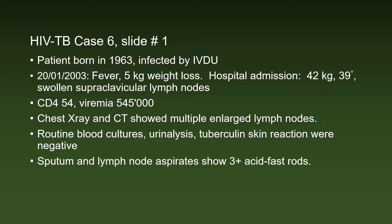Patient six was born in 1963, probably infected by IV drug use. In 2003, she had fever and weight loss. She was admitted to the hospital weighing only 42 kilograms, highly febrile, with swollen supraclavicular lymph nodes. The CD4 count was 54 and the viremia elevated. CT showed multiple enlarged lymph nodes. Routine blood cultures, urinalysis, and tuberculin skin reactions were all negative.